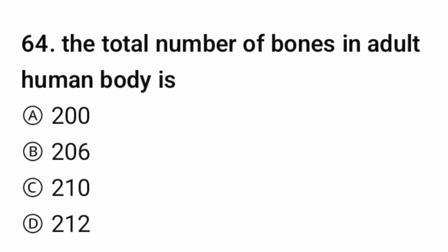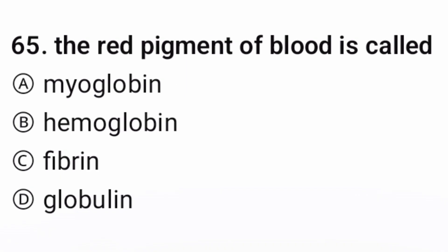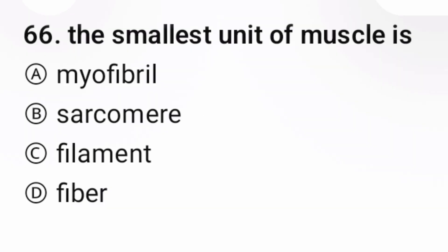Question 64: The total number of bones in the adult human body — the correct option is B, 206. Question 65: The red pigment of blood is called — option B is correct, hemoglobin. Question 66: The smallest unit of muscle is — option B.